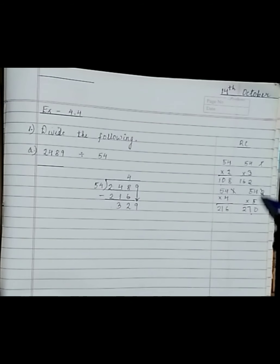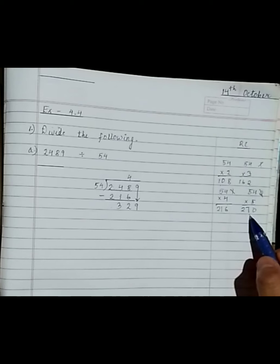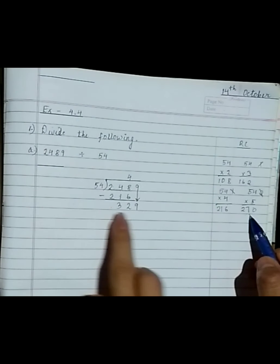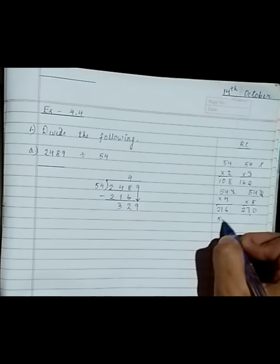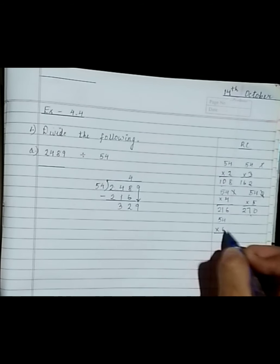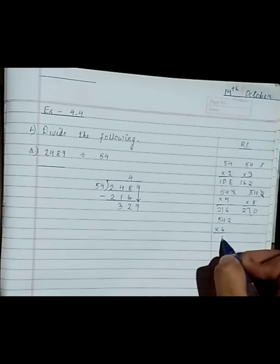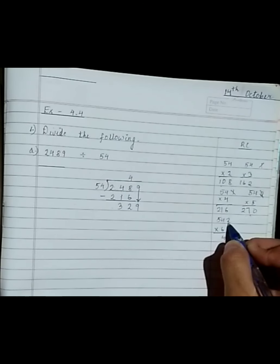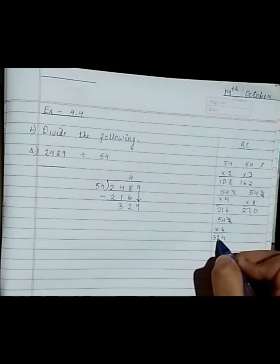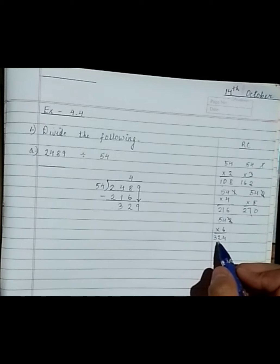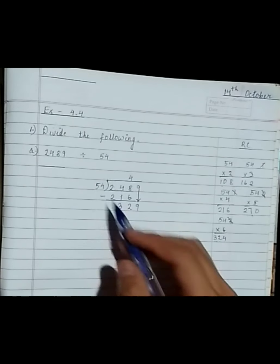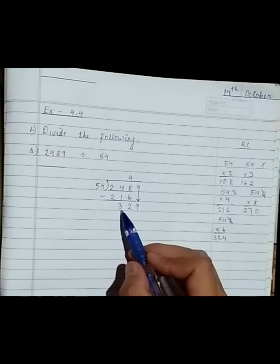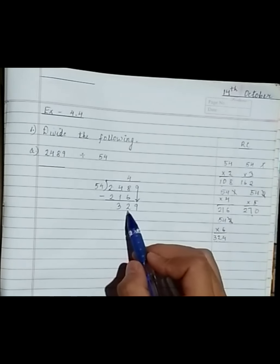54 into 5 gives 270. Now we have 329. 54 into 6: 6×4 is 24, 6×5 is 30, carry gives 324. So 324 is the nearest number in the times table of 54 to 329.